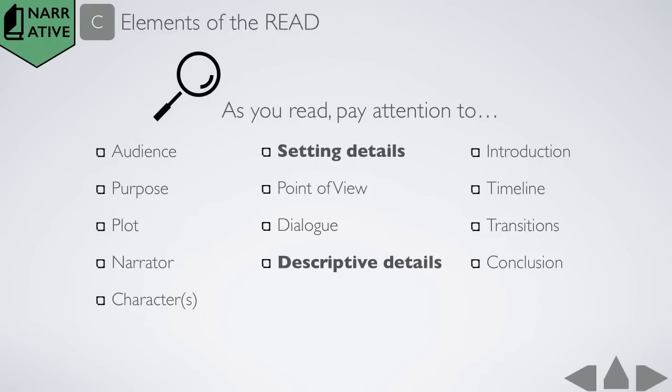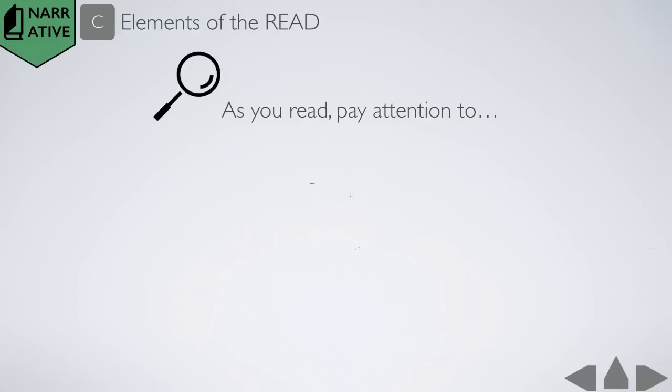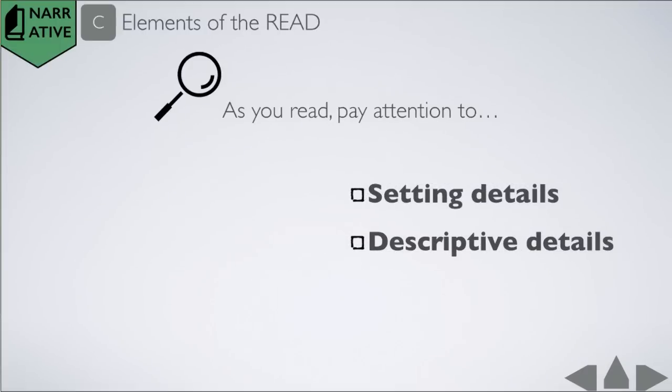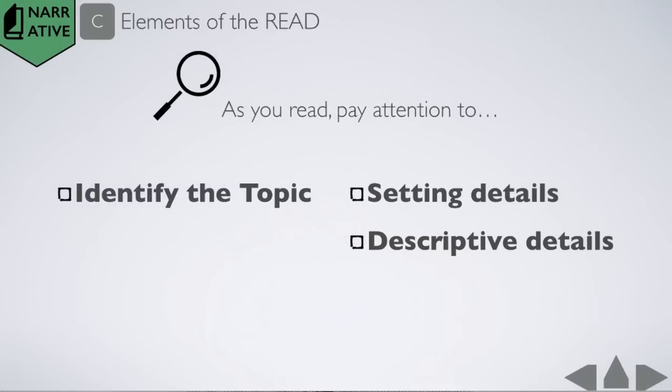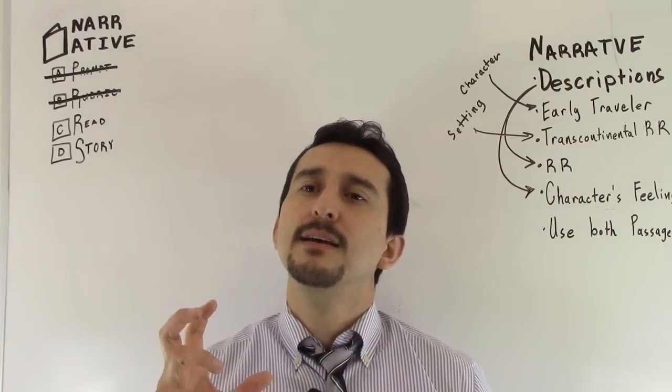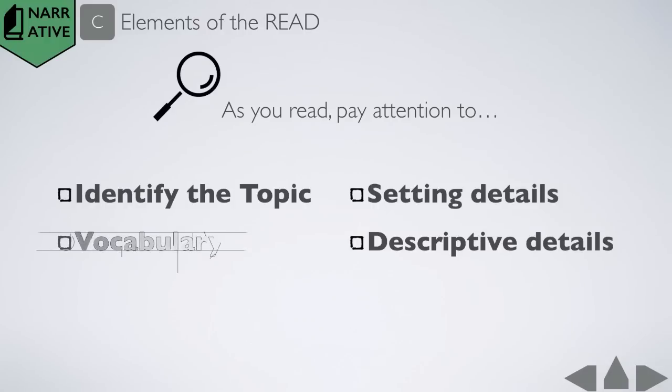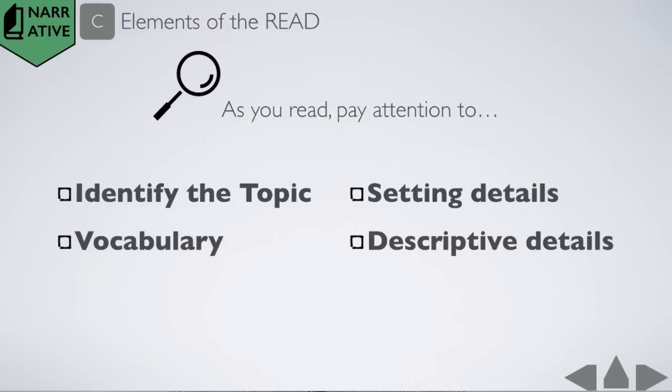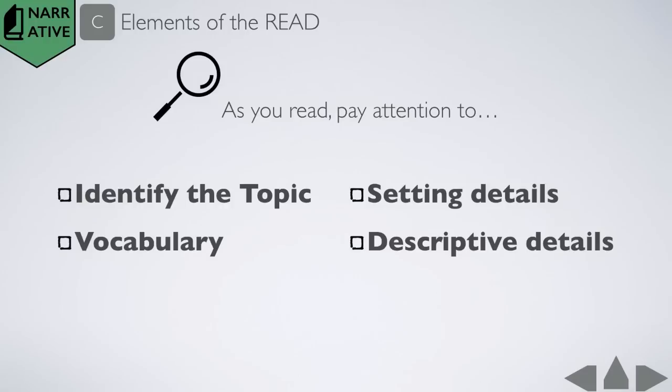So as they read, they're going to pay attention to details of the setting and those descriptive details that they can use to create their own setting. That's not all they need to pay attention to as they read. Obviously, first and foremost, they have to identify what is the topic of these passages. What is the overall topic being discussed? And when they have that identified, then they can start looking for that domain-specific vocabulary, that topical vocabulary, those vocab words that don't make sense unless it's pertaining to that topic.